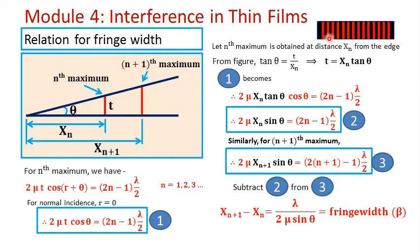We know that the interference pattern in a wedge-shape film experiment is linear and contains alternatively placed dark and bright bands. We can define fringe width as the distance between centers of two consecutive dark bands or the distance between centers of two consecutive bright bands. Let us try to get the relation for this fringe width.